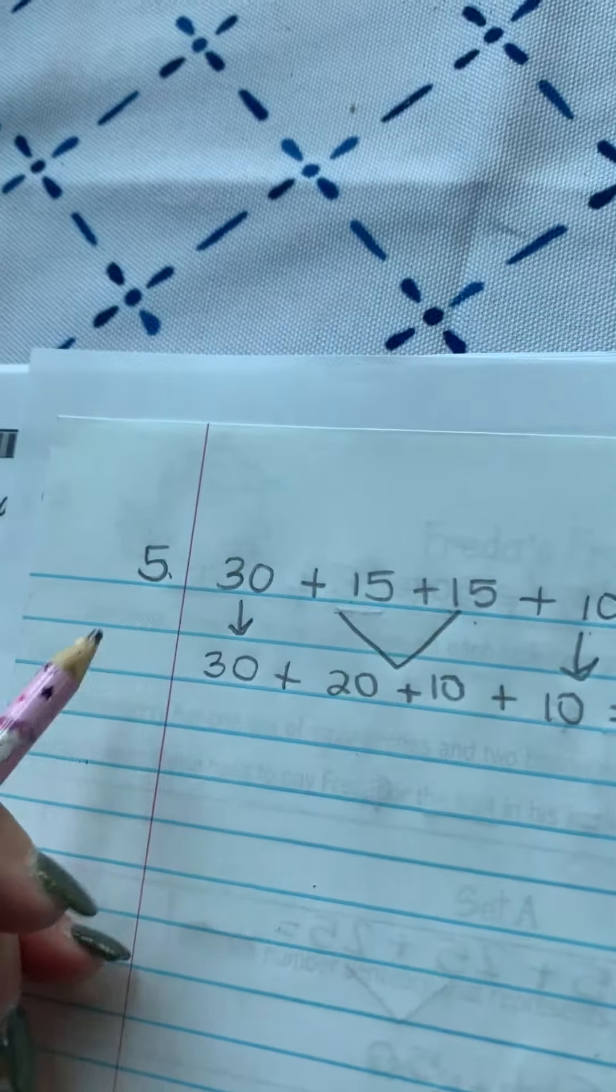And one orange. So I'm going to set that up: 30 plus 15 plus 15 plus 10.